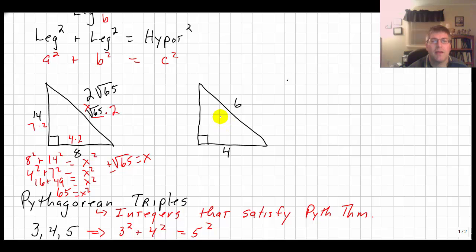We could do the same thing with this triangle. This one's a little bit different. We want to find the length of one of the legs now and not the hypotenuse. So we have to be careful. This isn't going to be 4 squared plus 6 squared equals y squared.